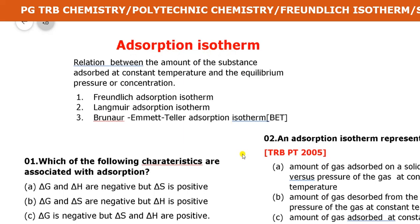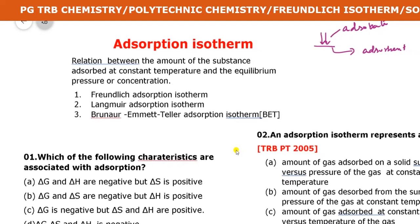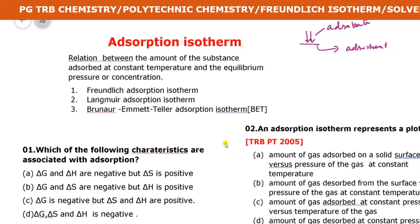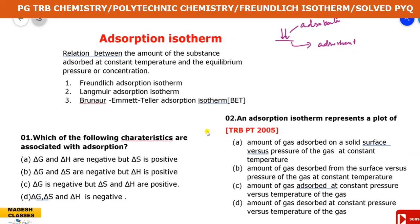Adsorption is a surface phenomenon - that is, the accumulation of particles on the surface of a material. The material is said to be the adsorbent, and the substance which gets adsorbed on the surface is called the adsorbate. There are types of adsorption: physical adsorption and chemical adsorption.